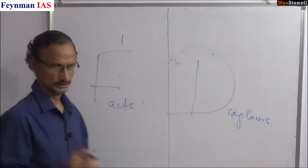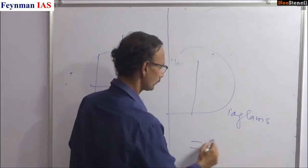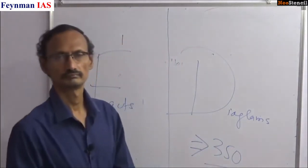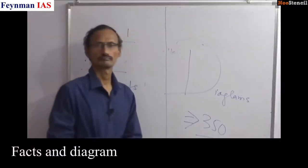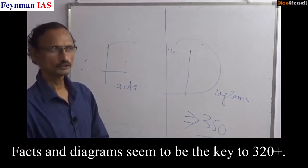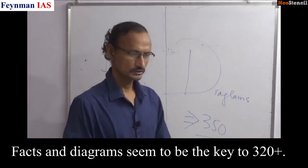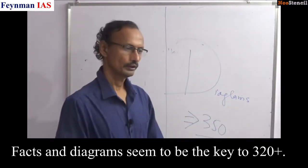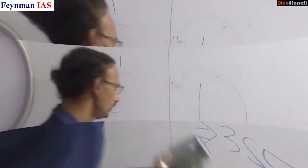Going by their strategy, two things seem to be very important. Facts and diagrams. Facts and diagrams seem to be the key to 350. What is a good answer from UPSC point of view is a lot different from what is a good answer from a good anthropology textbook.